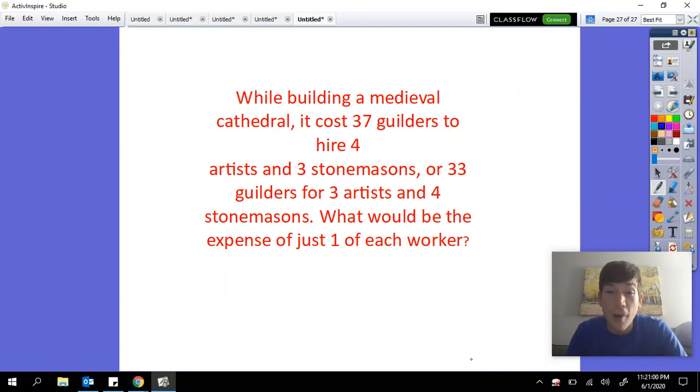All right guys, today we're looking at this problem called the cathedral problem. It says while building a medieval cathedral, it costs 37 guilders. Guilders is the currency of money, like dollars, but it's a different and old currency.